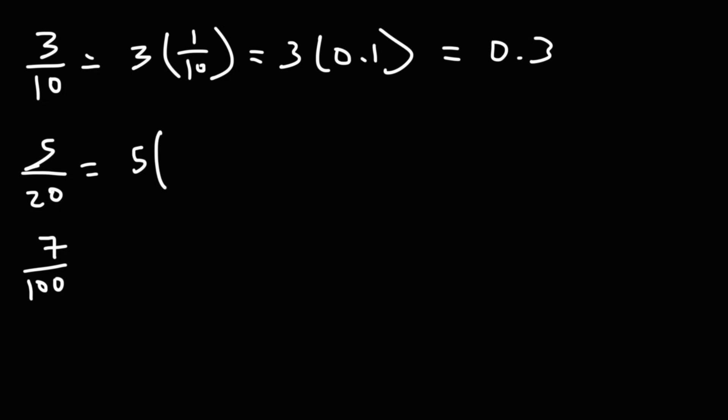5 over 20 is 5 times 1 over 20. 1 over 20, we know that's on the list. That's 0.05. 5 times 5 is 25, so 5 times 0.05 is 0.25.